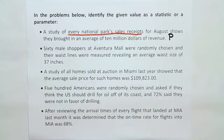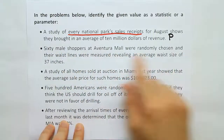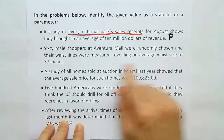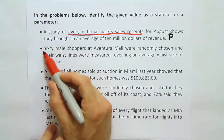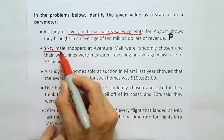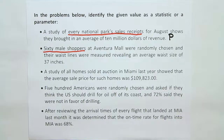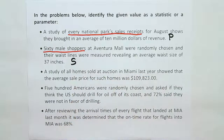The next problem says: '60 male shoppers at Aventura Mall were randomly chosen and their waistlines were measured, revealing an average waist size of 37 inches.' Only 60 male shoppers were surveyed — that's not the population. It's something calculated from a sample, so it is a statistic. S for statistic.